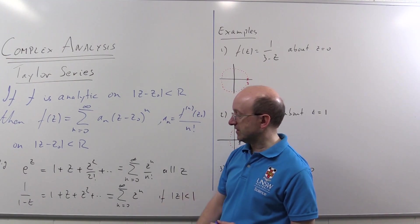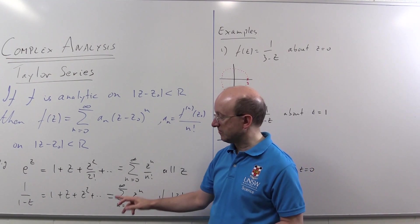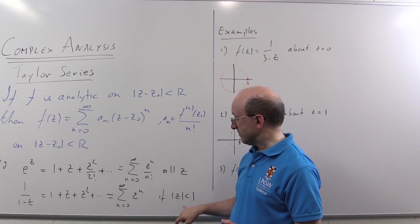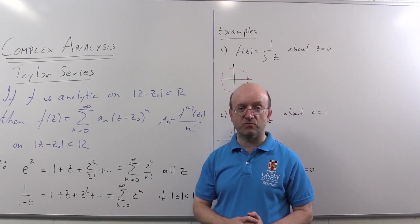And the other one is the geometric series, one over one minus z: one plus z plus z squared and so on, sigma z to the n. But that only converges if mod z is strictly less than one.